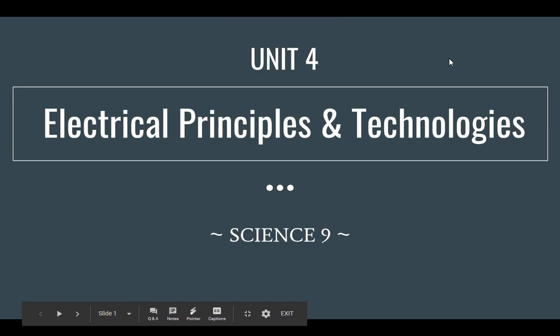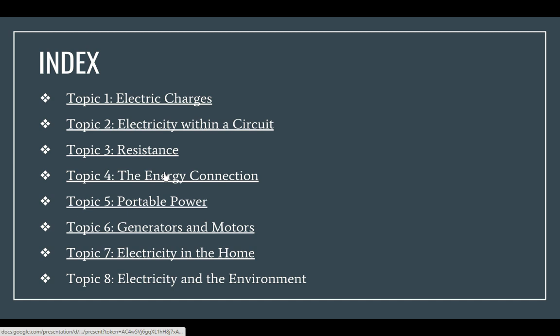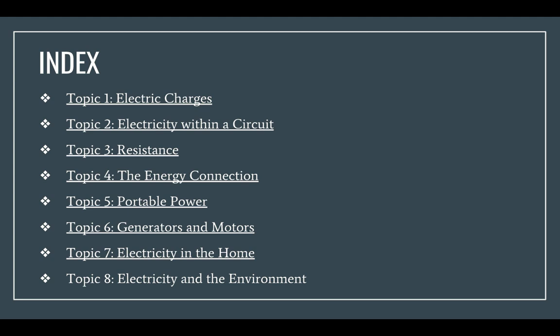So you guys are starting a unit — electrical principles and technologies. This unit is going to be about electricity and the different kinds. The first topic is electric charges, which is what we're doing today. Then you'll do electricity within a circuit, making a little circuit with light bulbs. Then resistance, the energy connection, power — how we get power to your house — generators and motors, electricity in the house, and electricity in the environment, including how electricity is produced and environmental impacts.